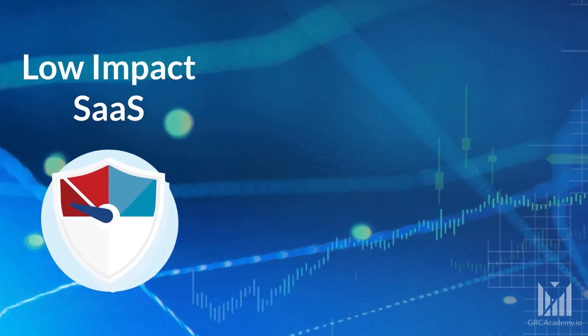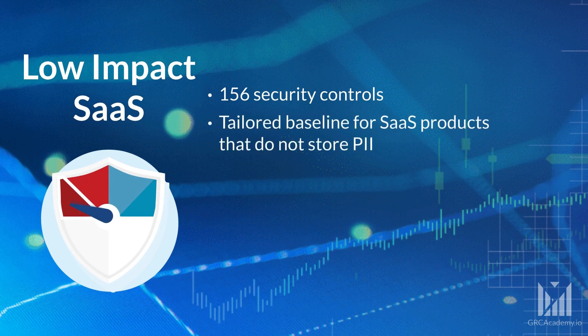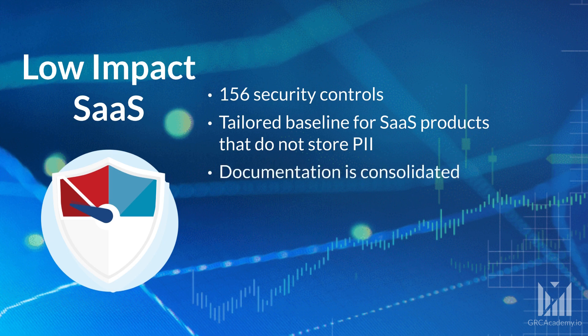The low-impact SaaS baseline also has 156 security controls, but it provides a tailored baseline. It's meant for SaaS products that don't store personally identifiable information beyond what is generally required for logging in, such as a username, password, and email address. The authorization process is abbreviated by consolidating documentation and allowing fewer controls to be tested.